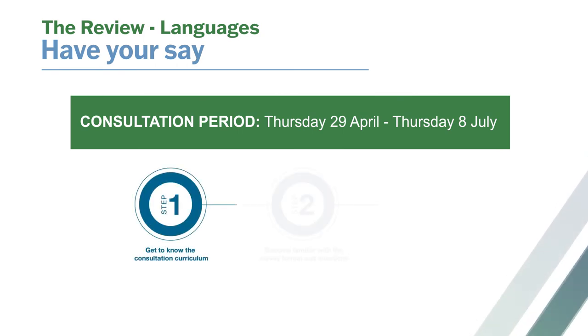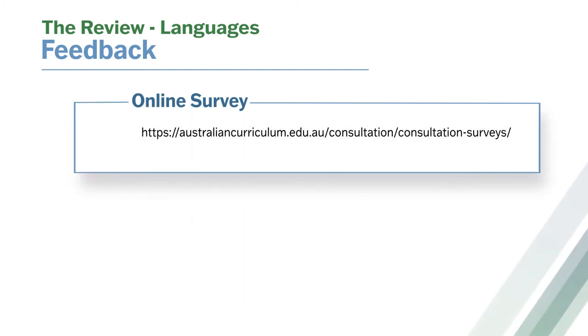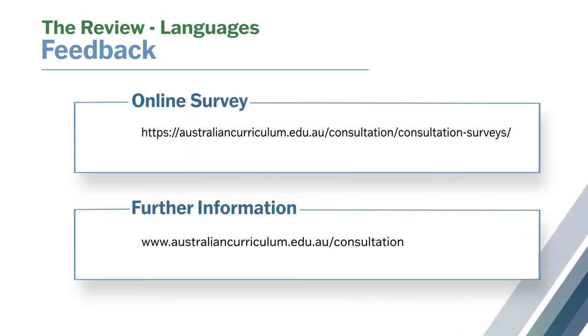So now we're looking to hear from you. This is a simple three-step process: read the consultation curriculum, familiarise yourself with the survey, and finally, complete the survey. It's important we hear your views — we want to hear all your feedback, positive and negative. Your responses will help shape an Australian curriculum for the next generation of children. To give your feedback, simply complete the survey.